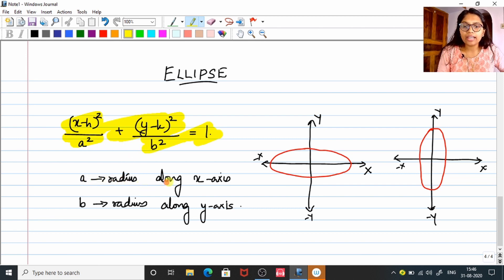Here a is the radius along x-axis. So for this particular figure, this is your x-axis and the radius along x-axis, so your a value will be this. And moving on to b, b is the radius along y-axis. So this is your b. So here, since a is greater than b, we get an ellipse flattened along x-axis.